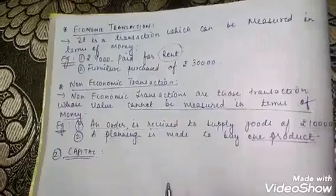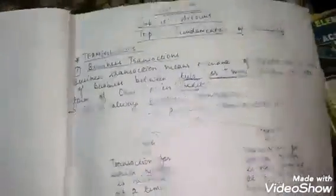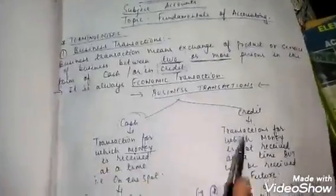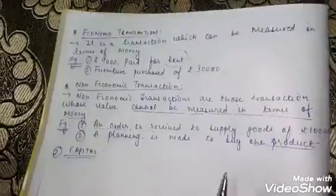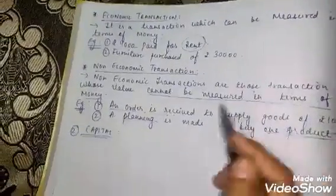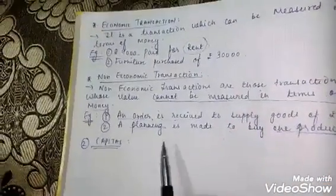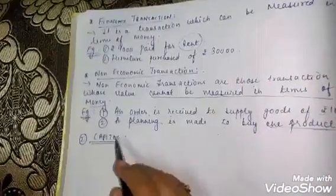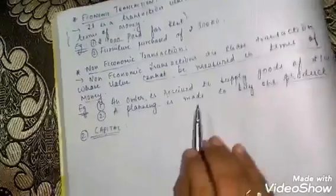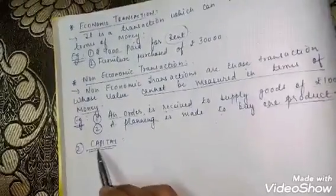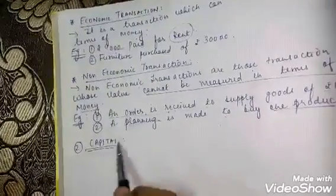So that is all for today. Today I have covered: business transactions, cash transactions, credit transactions, economic transactions, and non-economic transactions. We will meet in the next video, where I will cover further terminologies. My second terminology will be Capital.